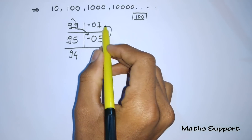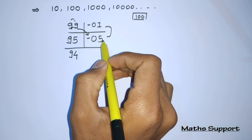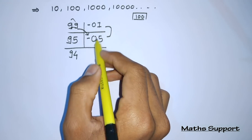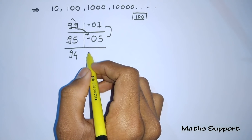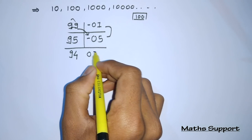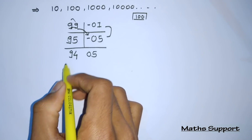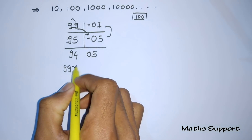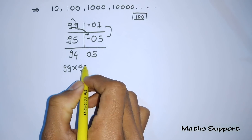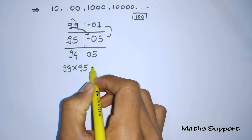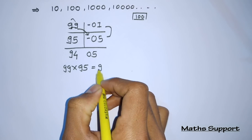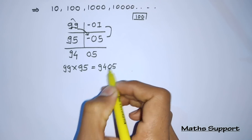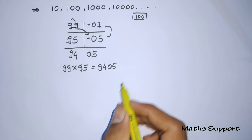And we multiply the two differences: 1 times 5 equals 5. But we write it in 2 digits, so that is 05. So the multiplication of 99 and 95 is 9405. That is a simple method.